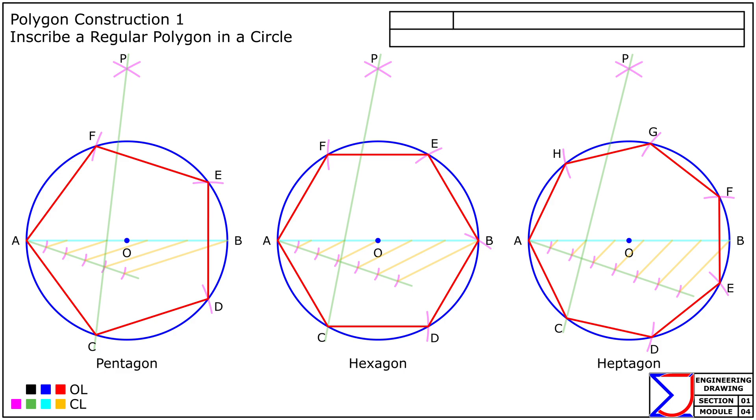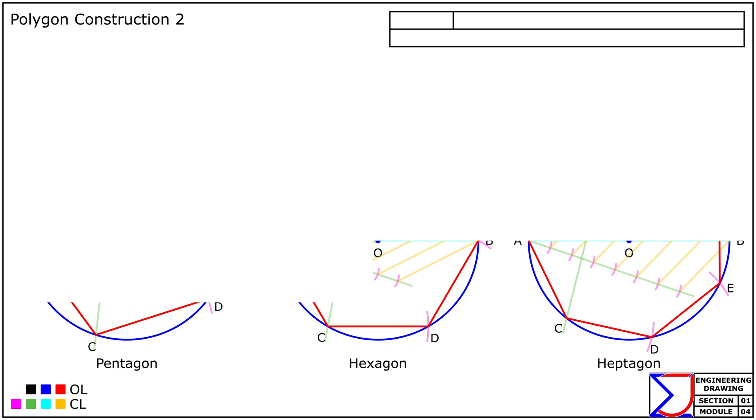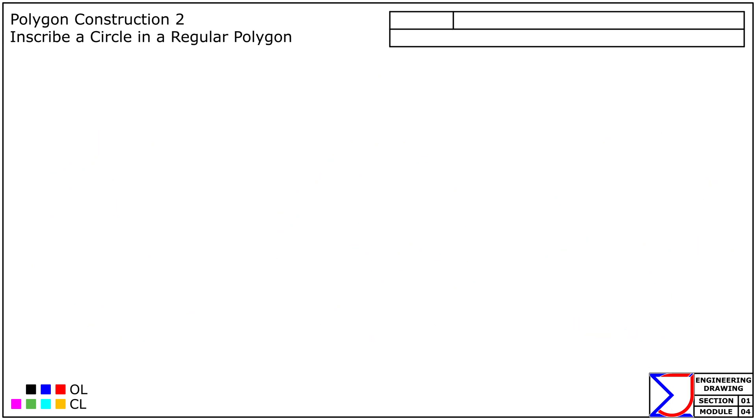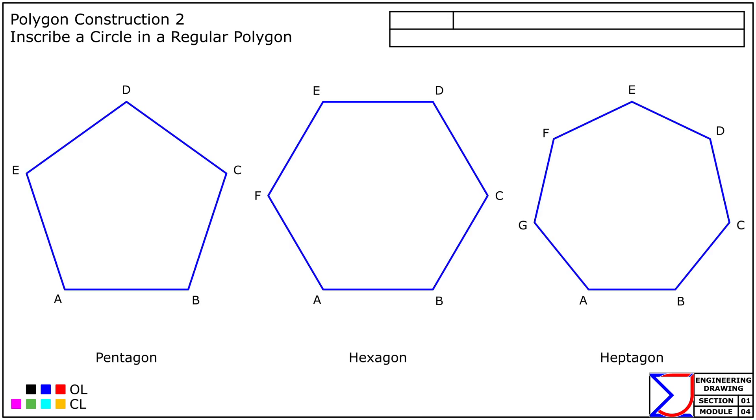Polygon Construction 2. Now let's look at how to inscribe a circle within a regular polygon. First, select any two sides of the polygon and bisect them.